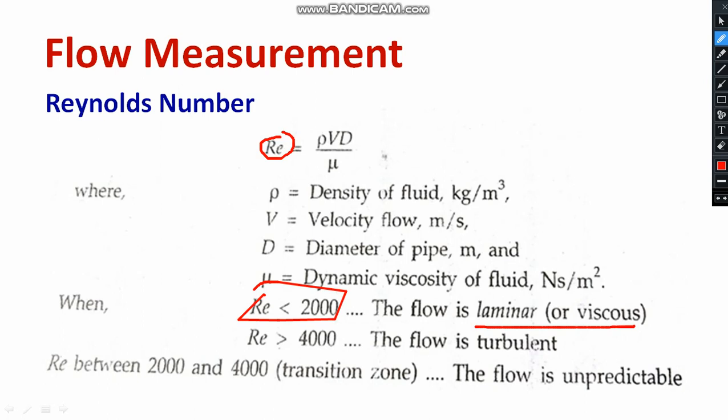If I talk about the fluid flow in turbulent, the Reynolds number must be greater than 4000. If the Reynolds number is in between 2000 and 4000, we cannot identify what kind of fluid flow it is, either laminar or turbulent.